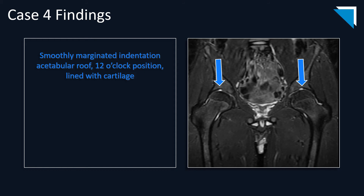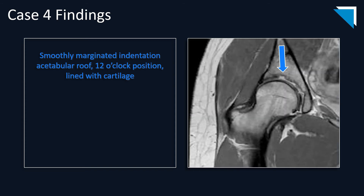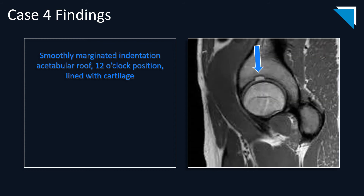Case four is a normal variant, and I do not want you to misdiagnose it, as this patient was. This is a smoothly marginated indentation in the acetabular roof at the 12 o'clock position, lined with cartilage. This patient has the anomaly bilaterally. On a small field-of-view PD-weighted sequence, you can again see the smoothly marginated indentation in the acetabular roof at the 12 o'clock position, confirmed on the sagittal image.